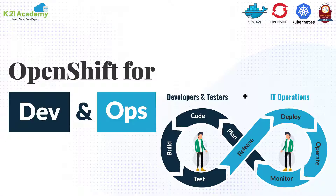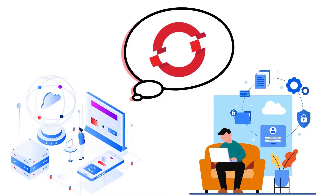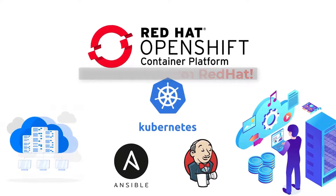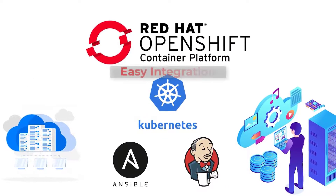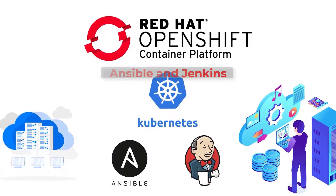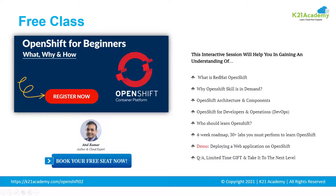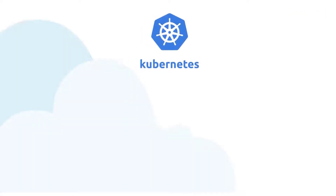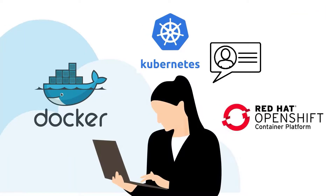I hope you liked this short video and it sparked your interest in knowing more about OpenShift — a platform from Red Hat, powered by Kubernetes under the hood, with easy integration with DevOps tools like Ansible and Jenkins. To know more, you can register for our free class at k21academy.com/openshift02, where our Docker, Kubernetes, and OpenShift experts will be talking.